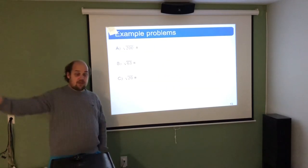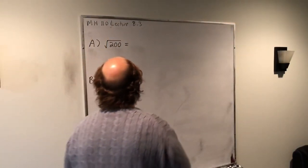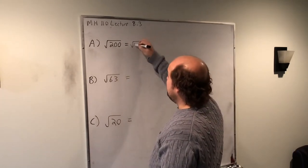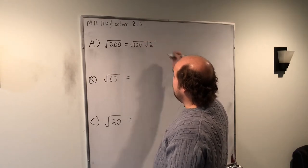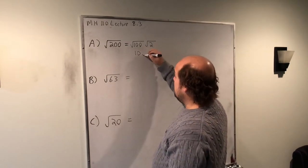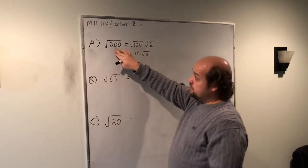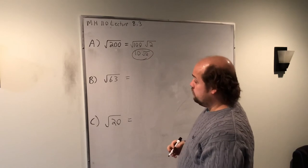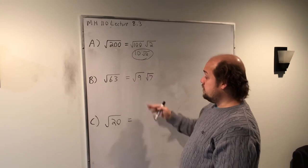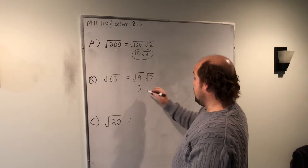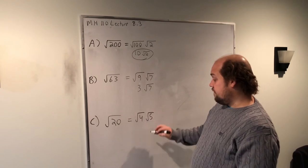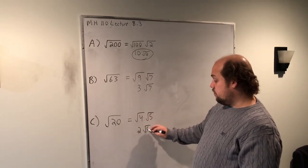For the root of 200, the largest perfect square that goes in is 100, so I break it into root of 100 times root of 2. Root of 100 is 10, leaving root 2 behind — final answer: 10 root 2. For root of 63, I break it into root of 9 times root of 7. Root of 9 is 3, leaving root 7 — final answer: 3 root 7. For root of 20, I break it into root of 4 times root of 5. Root of 4 is 2, leaving root 5 — final answer: 2 root 5.